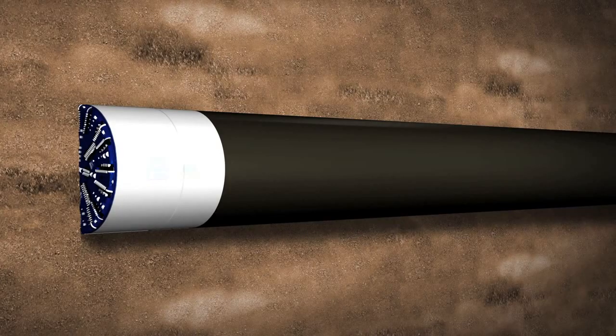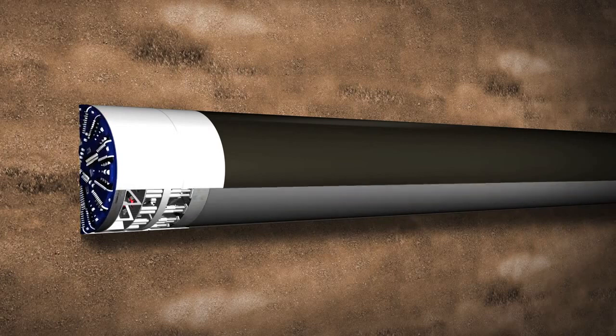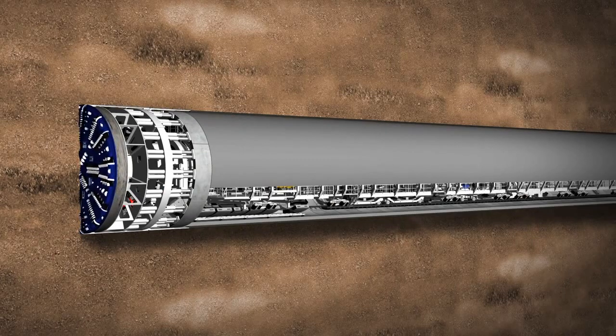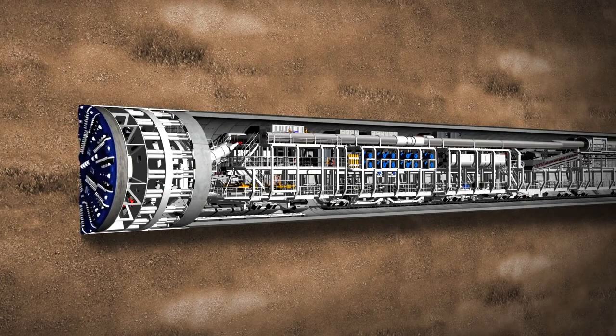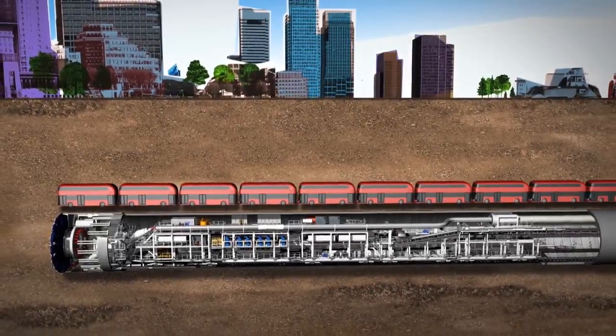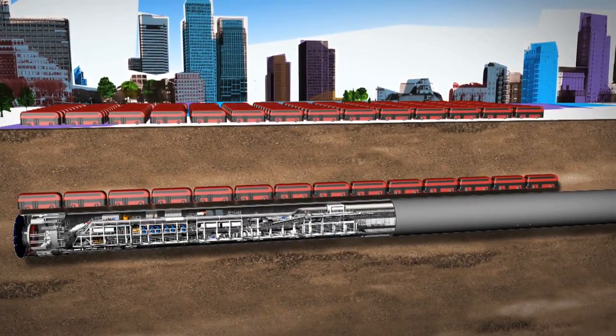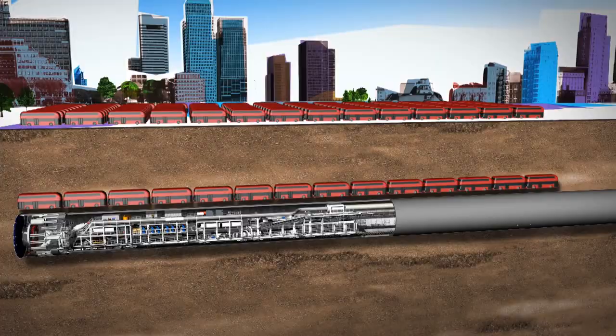Eight tunnel boring machines, or TBMs, will drive through the ground to create Crossrail's tunnels. A TBM is 148 metres long and weighs 1,000 tonnes. This is the equivalent of 14 London buses end-to-end and a staggering 143 buses in weight.